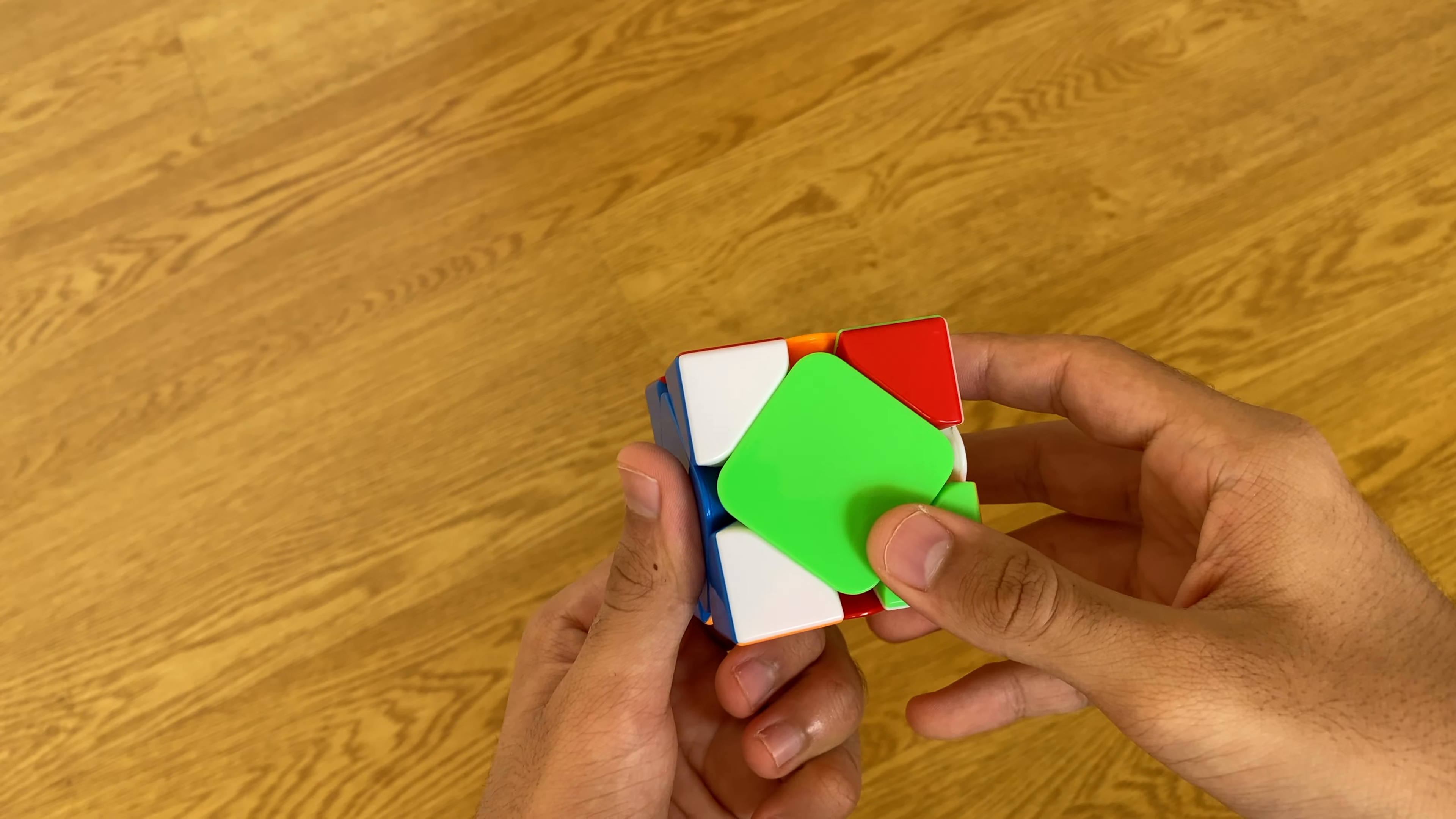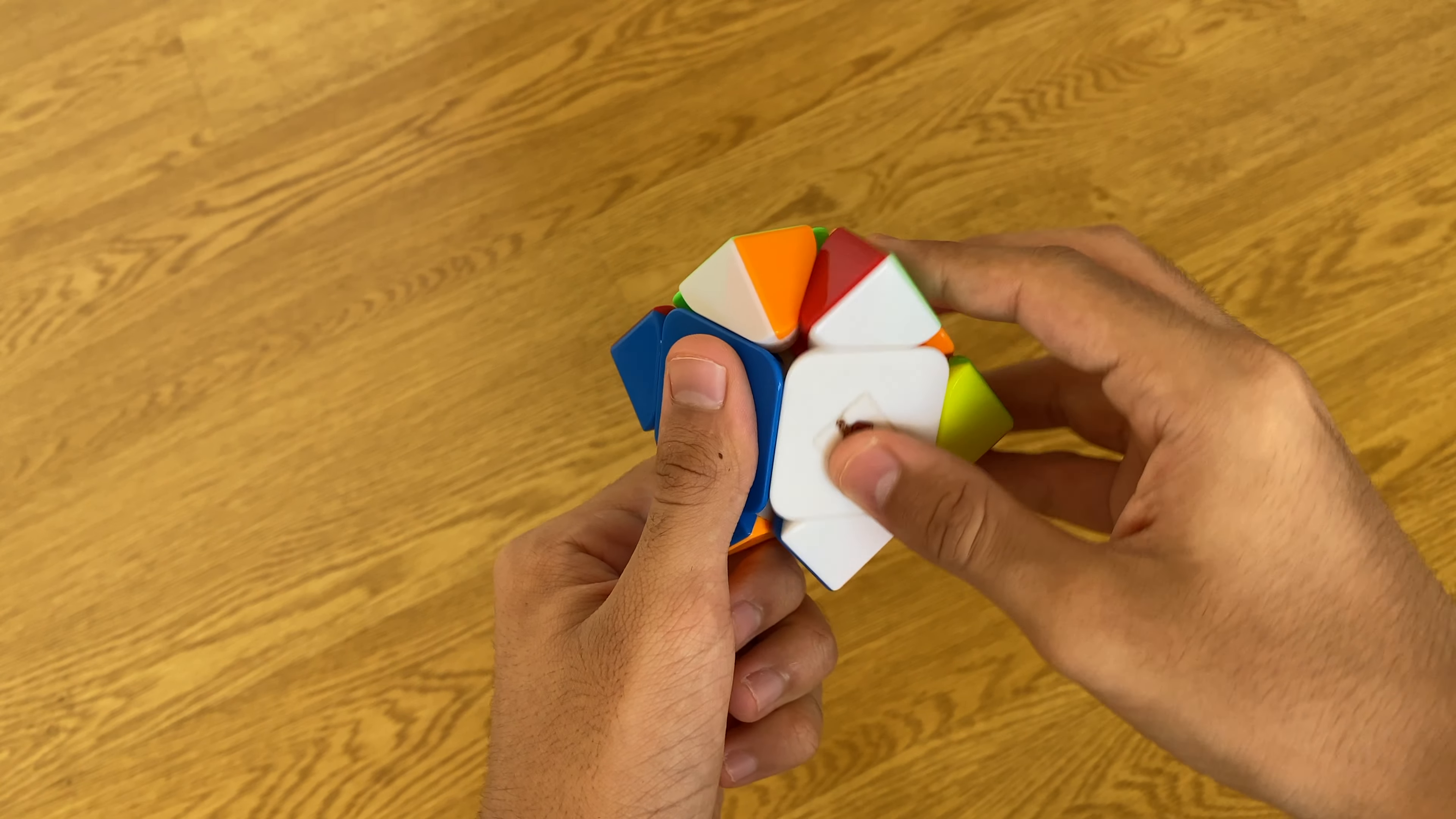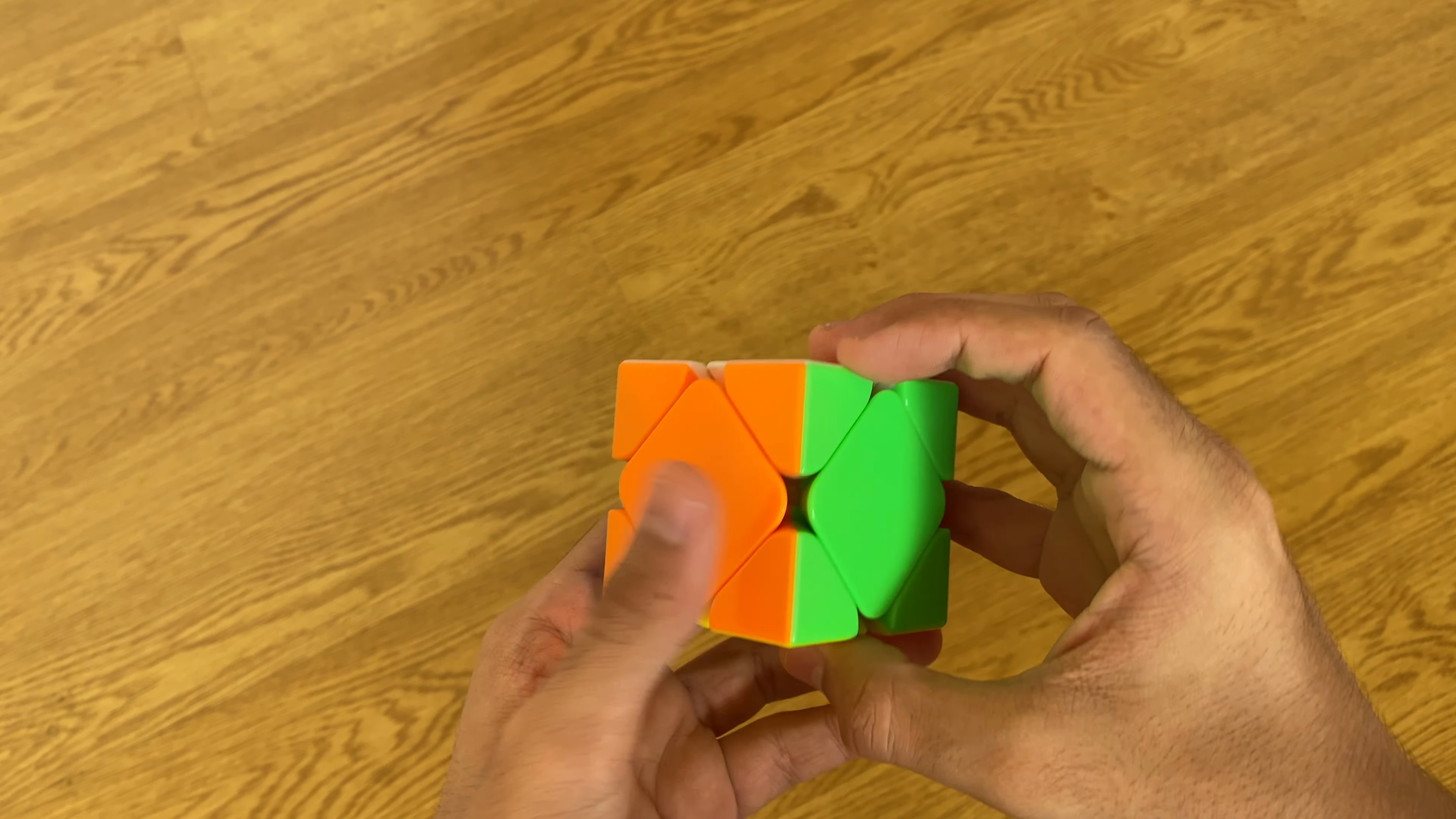You rotate back and then do the opposite of what you just did. You bring that away, bring this down, then bring this one back, and then bring this one back, and it completely solves this revolutionary scramble.